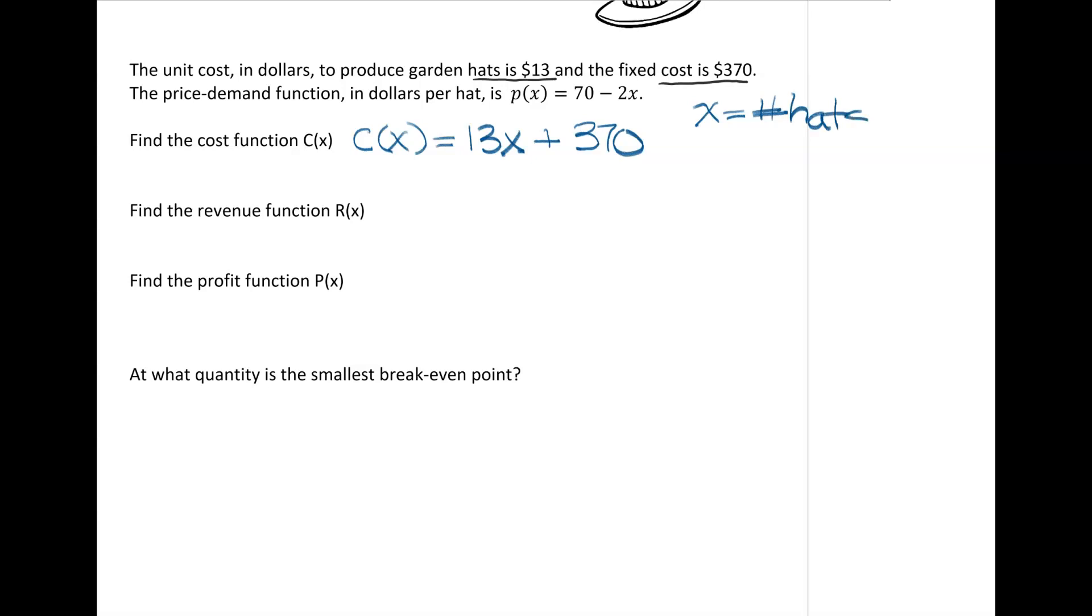Revenue—we know revenue is always going to be quantity multiplied by price. This problem doesn't give us a price, but they give us a price function. So the quantity, which we mentioned is x because x represents the number of hats, is going to get multiplied by that price function p(x) = 70 - 2x, which is given to us.